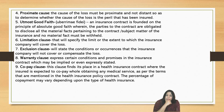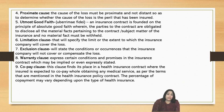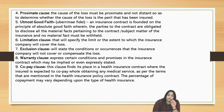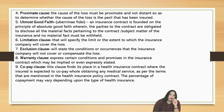Next is the limitation clause, which specifies the limit or extent to which the insurance company will cover the loss. The exclusion clause specifies the conditions or occurrences that the insurance company will not cover or compensate. Next is the warranty clause — the clause basically expresses certain conditions and promises in the insurance contract which may be implied or even expressly stated. Next is the co-pay clause, which finds place in a health insurance contract where the insured is expected to co-pay while obtaining any medical service as per the terms mentioned in the health insurance policy contract. The percentage of co-payments may vary depending upon the type of health insurance.